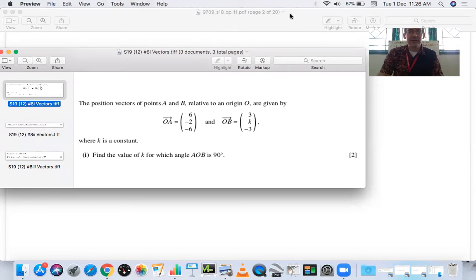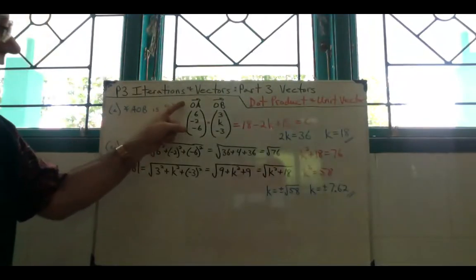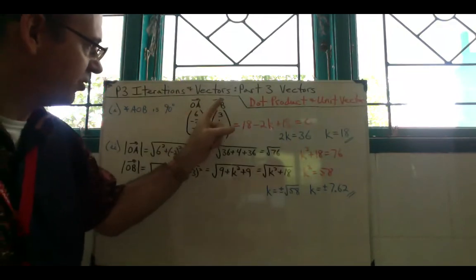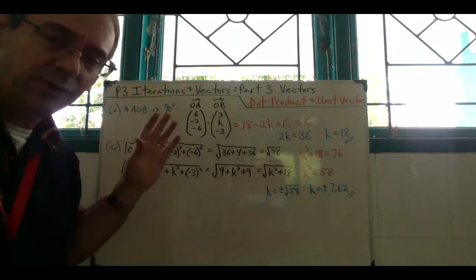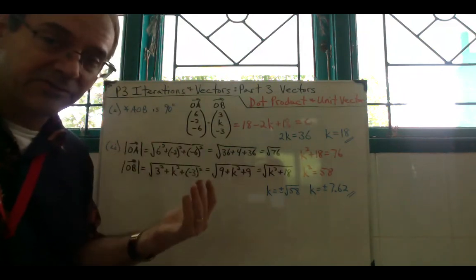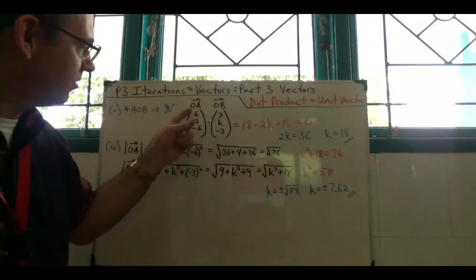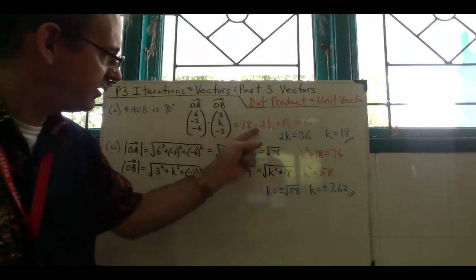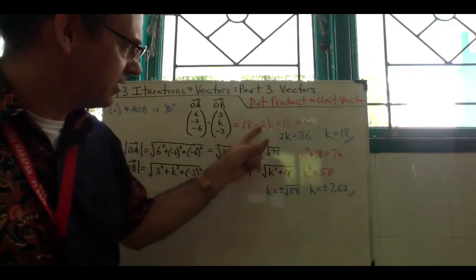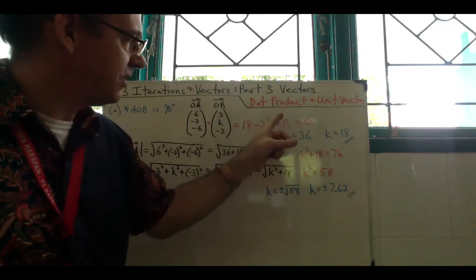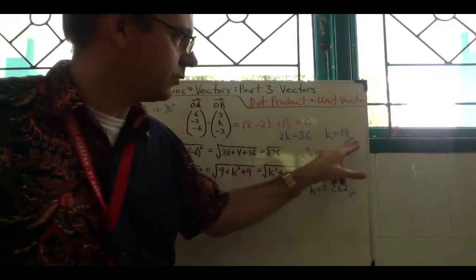For the perpendicular condition: OA·OB = 0. So 6×3 + (-2)×K + (-6)×(-3) = 0, giving 18 - 2K + 18 = 0. Combining: 36 - 2K = 0, so 2K = 36, and K = 18. For the equal-length condition, these are separate: |OA| = √(36 + 4 + 36) = √76. |OB| = √(9 + K² + 9) = √(K² + 18). Setting them equal: K² + 18 = 76, so K² = 58.